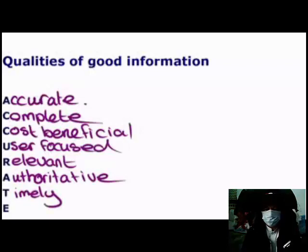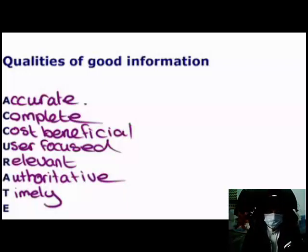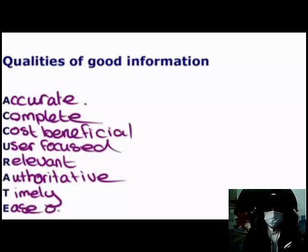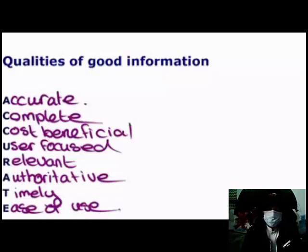Good information must also be timely. If I'm looking for directions to the train station today and I'm emailed directions by someone in two weeks' time, that's not particularly useful. Likewise, within a company, if management need a particular piece of information to make a decision within a deadline, it needs to be provided to them quickly — if we wait too long they will no longer be able to use it. Finally, good information should have ease of use — we need to consider the format and language in which information is provided. We might provide excellent, accurate, complete, user-focused information, but if it's written in a foreign language that management can't understand, it is utterly useless.